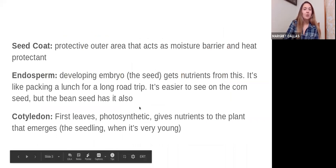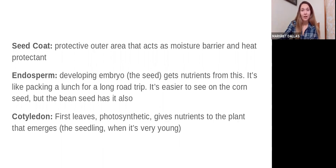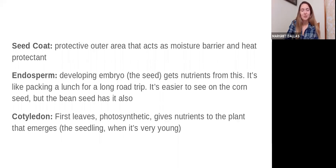The outside of the seed is called the seed coat, and that's a protective area that prevents moisture from getting in before it's ready. It takes a little bit of time for moisture to get through that seed barrier, and it also acts as a heat protectant — protecting that embryo and all that DNA. It takes a lot of energy for plants to produce seeds and they really want to make sure they have the best opportunity possible to pass on their DNA to a new plant, just like people or animals are very protective of their young.